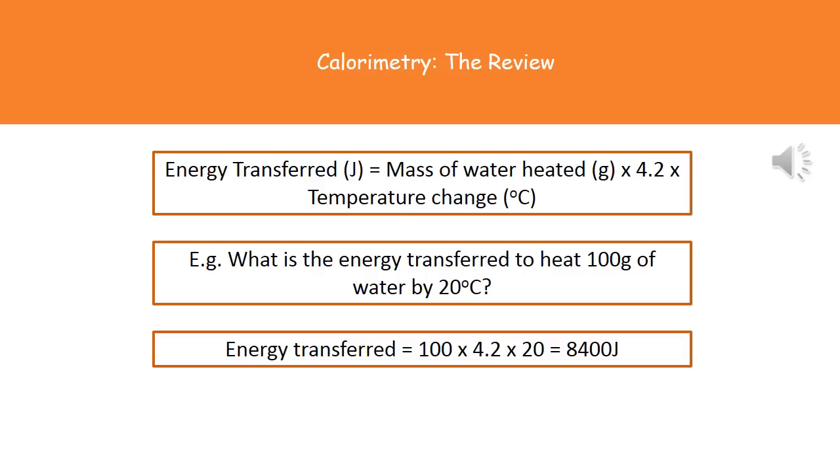This is one of the calculations we can carry out using the results of a calorimetry experiment. Now you don't have to memorize this equation because this is one of the ones that's printed on page two of your exam booklet. So just inside the front cover in that big list of equations you'll find your energy transfer equation. If you're asked to calculate how much energy is transferred in an experiment then what we're going to do is the mass of our water being heated in grams times by 4.2 times by the temperature change.